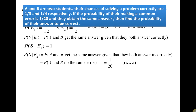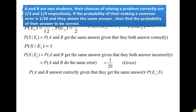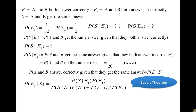We need to find the probability of the answer being correct given they obtained the same answer, i.e., P(E1|S). By Bayes' theorem: P(E1|S) = [P(S|E1) × P(E1)] / [P(S|E1) × P(E1) + P(S|E2) × P(E2)]. Substituting all the values gives us the answer as 10/13.